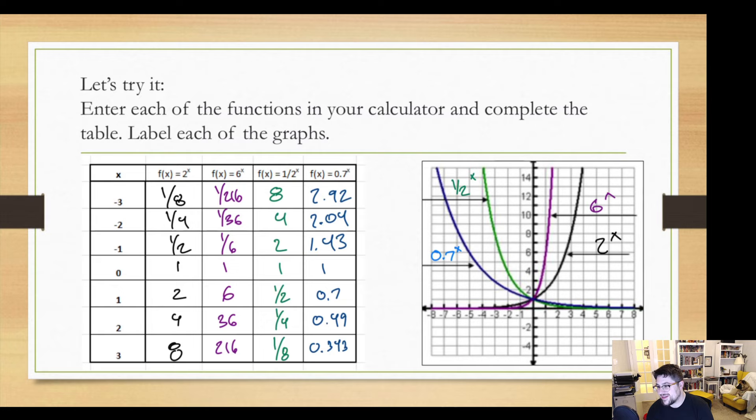And the graph that's in blue is our 0.7 to the x power graph. That's how we identify which graph is which.